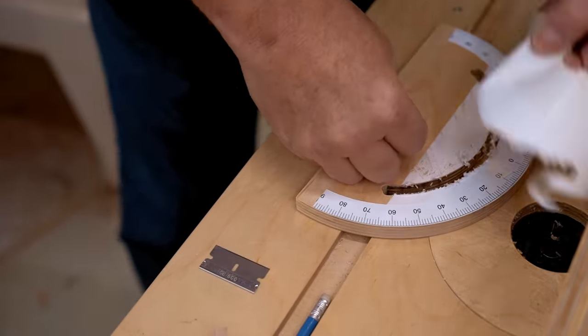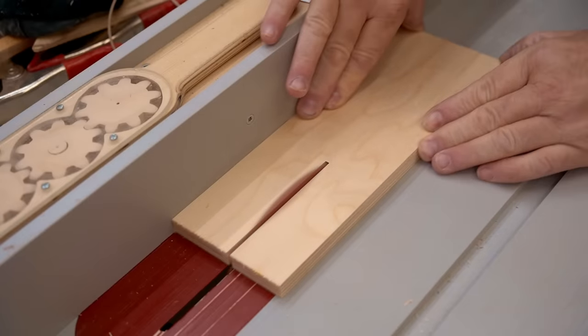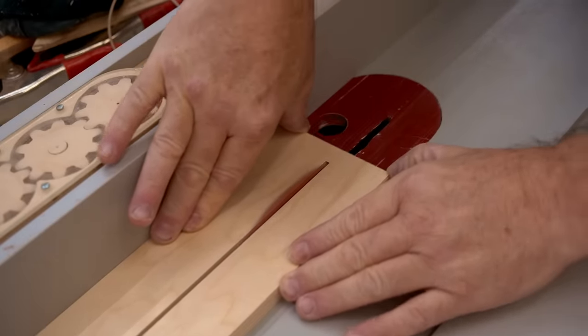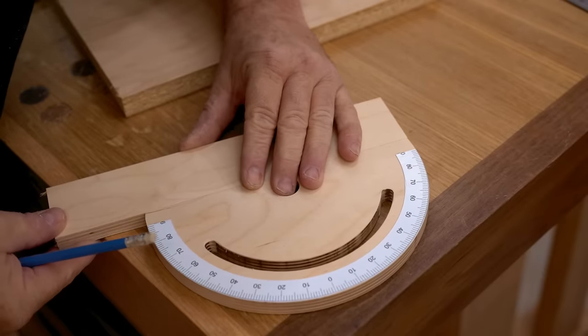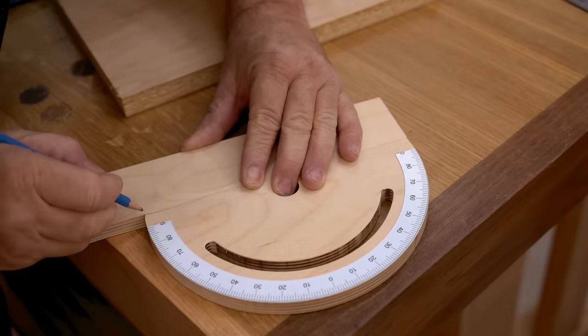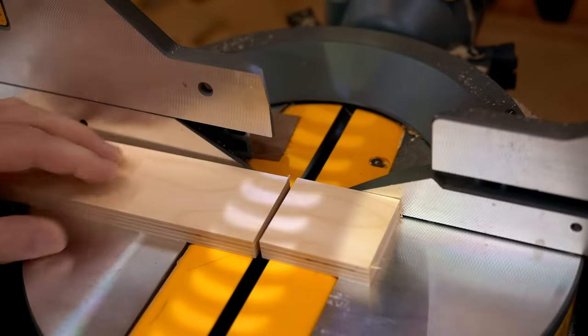With that done, I need to make the sub fence that's going to fasten to it, and once again that'll be half inch Baltic Birch plywood. Before I can glue it on, I need to cut a couple of slots in here. I need these so that I can adjust the fence back and forth and get it closer to the blade.